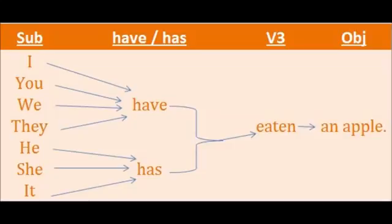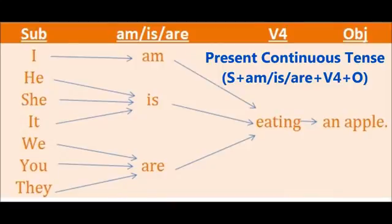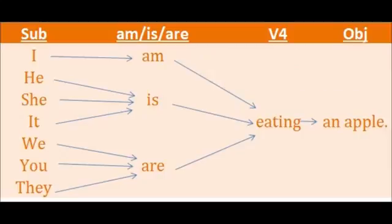The third tense in this present tense is present continuous tense. The structure for this one is subject plus am, or is, or are plus V4 plus object. Am is used for the subject I only. Is is used by the subjects like he, she, it. And are is used by the subjects like we, you, they.